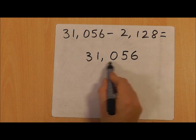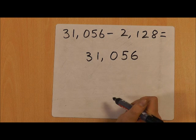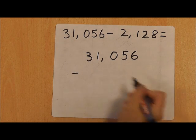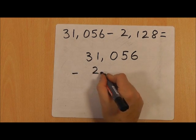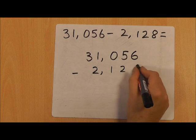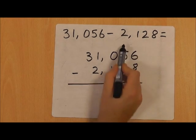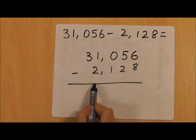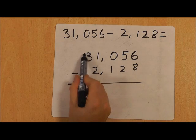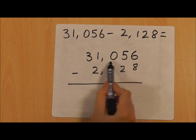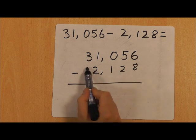I always start in subtraction with my bigger number, which in this case is 31,056. I'm going to take away 2,128, and I've made sure here that my units, tens, hundreds, thousands are lined up. Here we have a ten thousand amount in 31,056, but we don't have a ten thousand amount here.